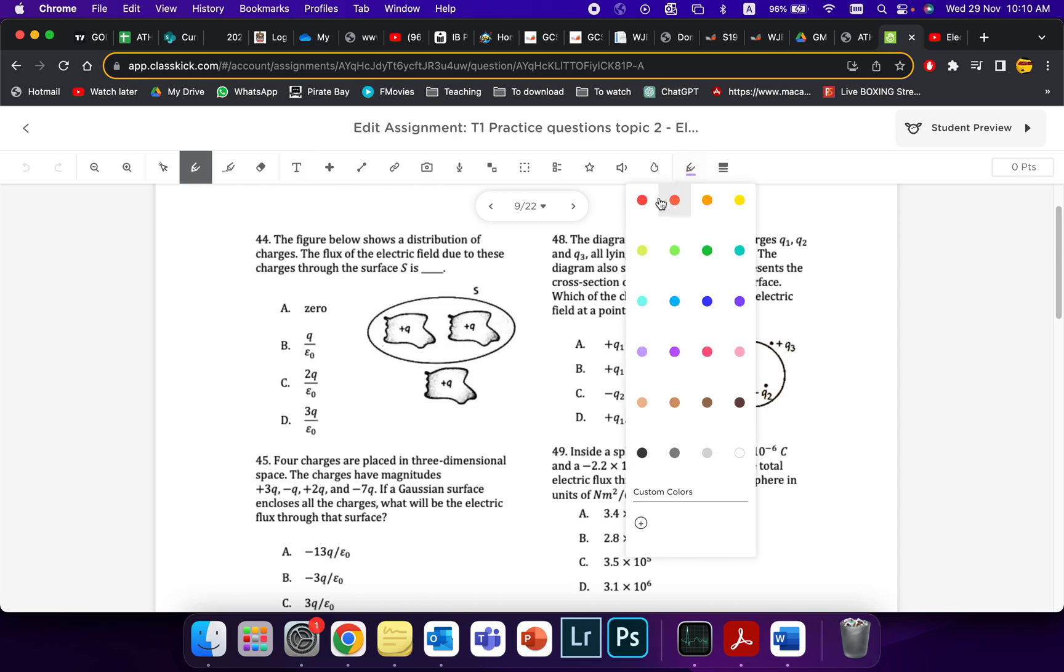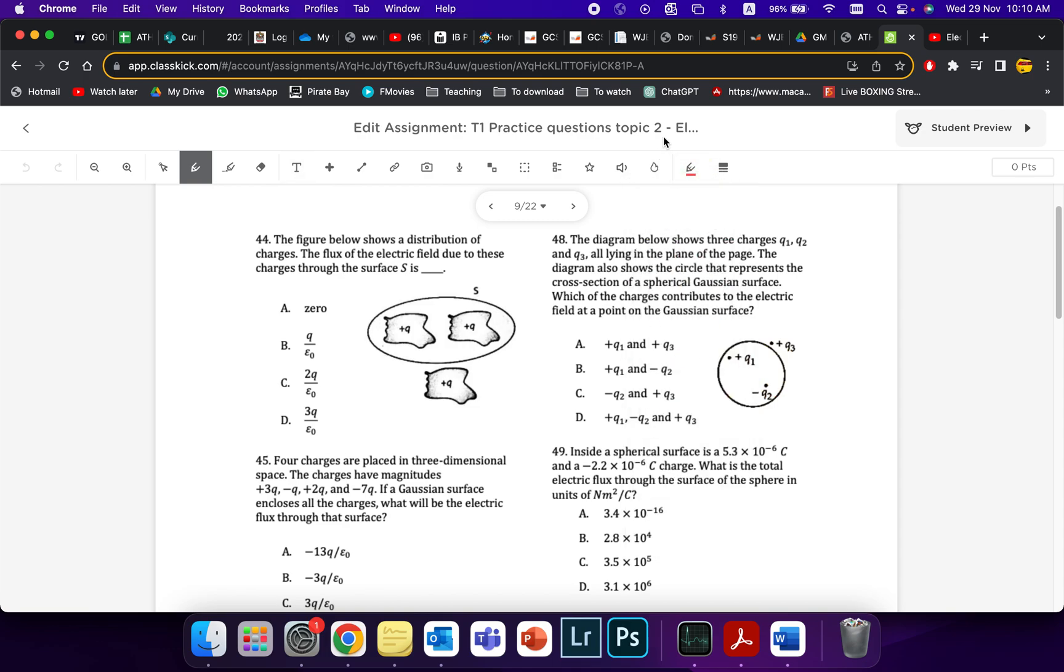Alright, so in this video I'm just going to continue with the practice questions on topic 2, electric flux, and we're talking about Gauss's law as well right now. So, looking at this question here, question 44, the figure below shows the distribution of charges. The flux due to these charges on the surface X is what? Which ones do we count?